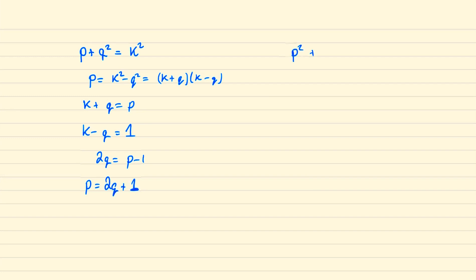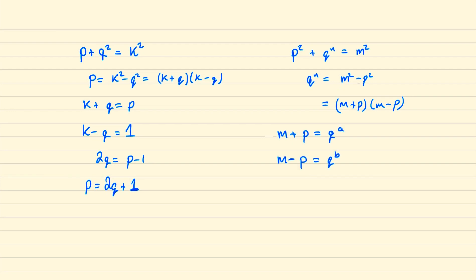Now if we consider when p² + qⁿ is a square number, we can write qⁿ as the difference of two squares and factorise this as (m + p) and (m - p). Given that q is prime, we know both these expressions must be some power of q. We know that a must be bigger than b, which is greater than or equal to 0. We'll consider the case b = 0 separately, but for now we assume b > 0. Subtracting these two equations gives 2p = qᵃ - qᵇ.